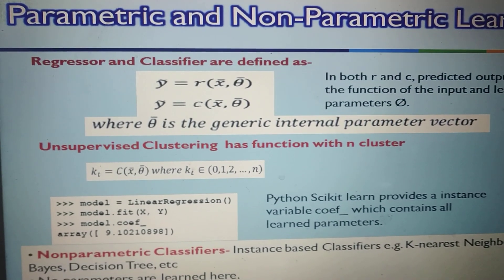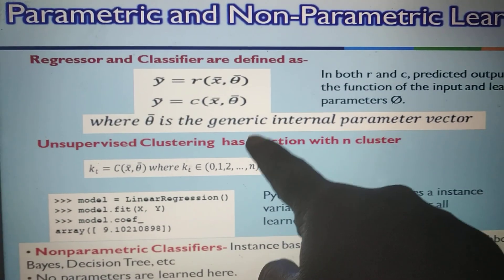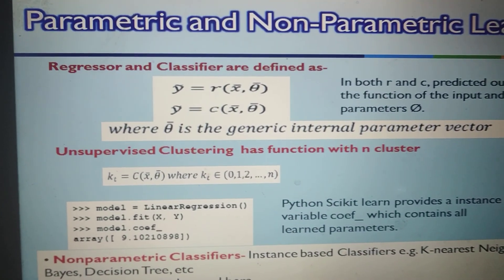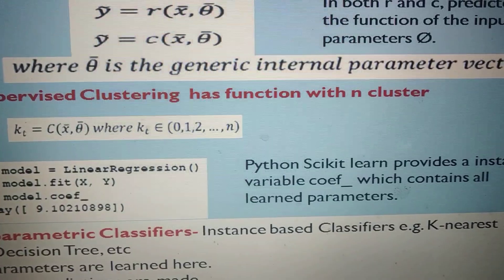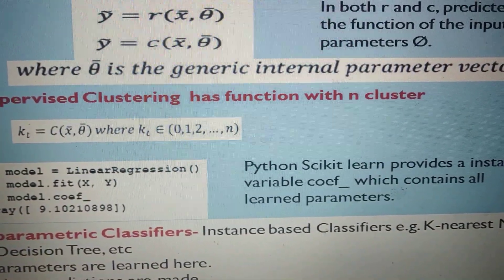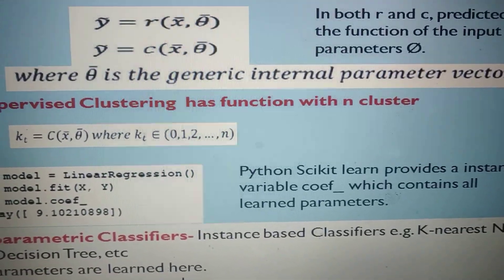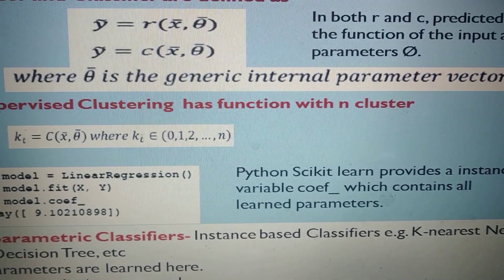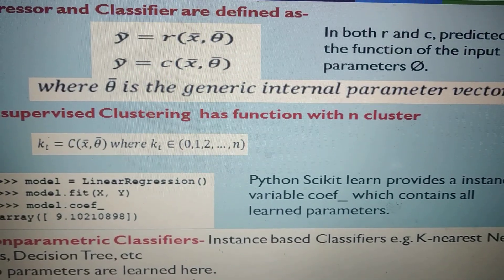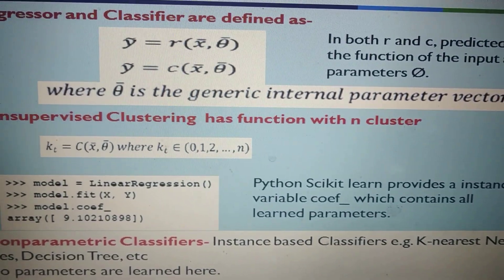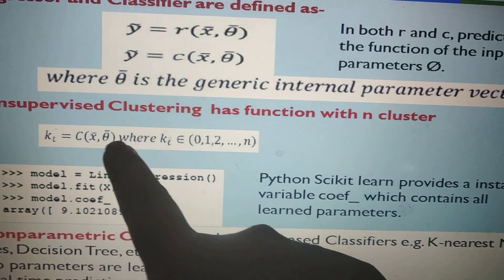Regressors and classifiers are examples of parametric models. In unsupervised learning like clustering, it can be represented as kc equals c(x, theta), where theta is again obtained through the training process and kc equals the number of clusters — which can be between 0 to n. The number of clusters formed for the given data x are determined based on the learned parameter theta, so theta plays a very important role.